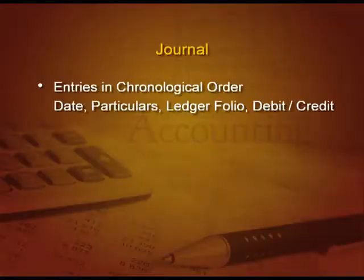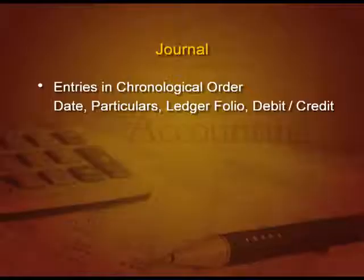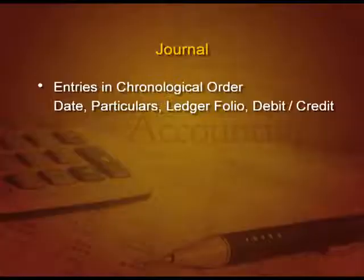What is a journal? A journal records entries in chronological order, that is date-wise order. We have four columns in that. The first column is date — the date of the transaction. Then particulars, where we write what is to be debited and what is to be credited. Then there is another column, ledger folio, a very small column in which we write the page number of the ledger where this particular account or entry is noted. Then there are two more columns: debit and credit.